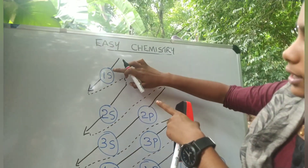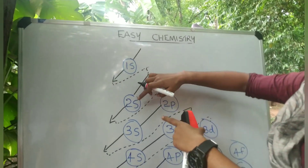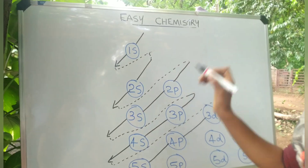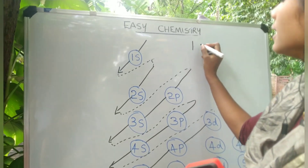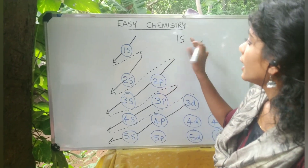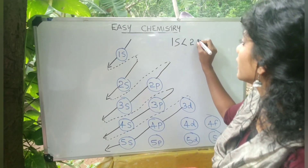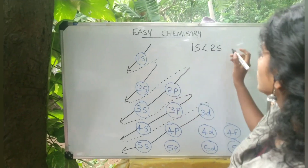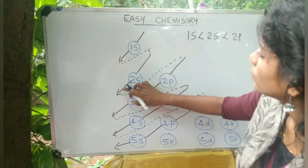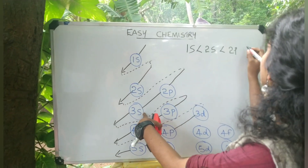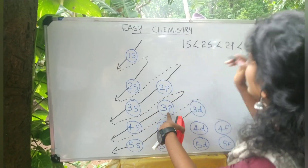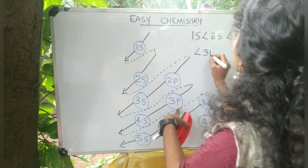Now, if we look at the energy order, we arrange the sub-shells by increasing energy. The order begins: 1s, then 2s, then 2p, then 3s. So the energy order is: 1s is less than 2s, 2s is less than 2p, 2p is less than 3s, 3s is less than 3p.